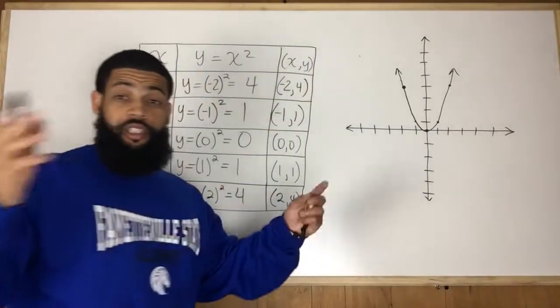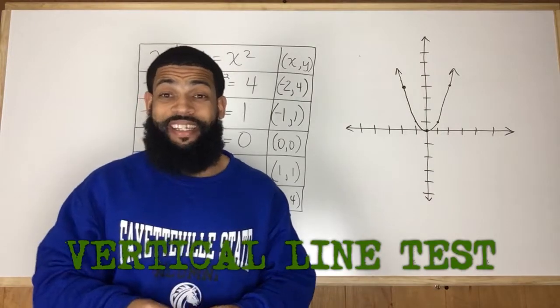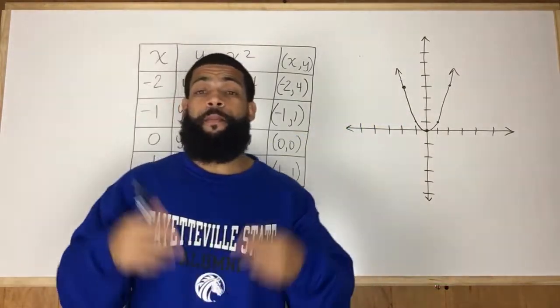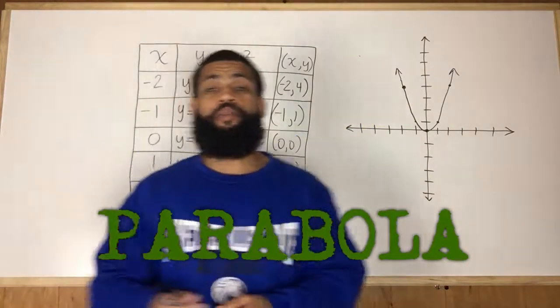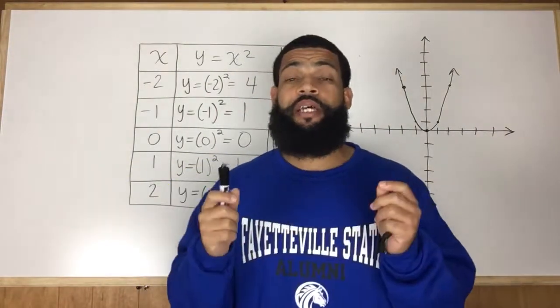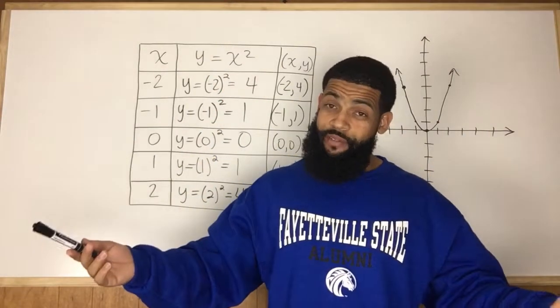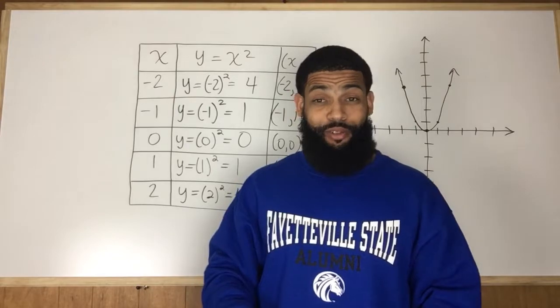And ladies and gentlemen, that is still a function. It still passes the vertical line test. This is what we call a parabola. So that's an example of a nonlinear function. It is still a function, it still passes the vertical line test, but it is nonlinear. So there you have it.